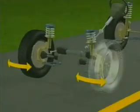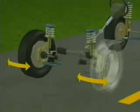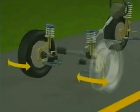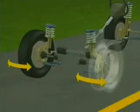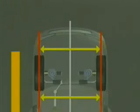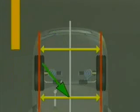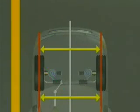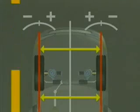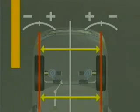The most critical alignment angle is total toe on the steering axle. Excessive positive or negative toe will cause scuffing and wear on the shoulders of the tires. Total toe is defined as the difference in distance measured across the front of the tires compared to the distance measured across the rear of the tires, and is measured in inches or millimeters. Total toe may also be defined as an angular measurement in degrees or in degrees and minutes.